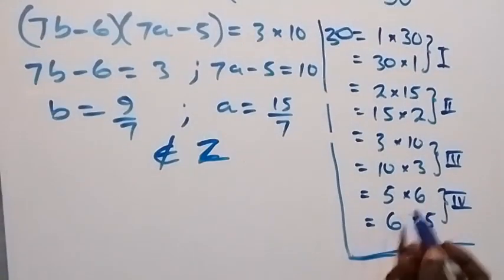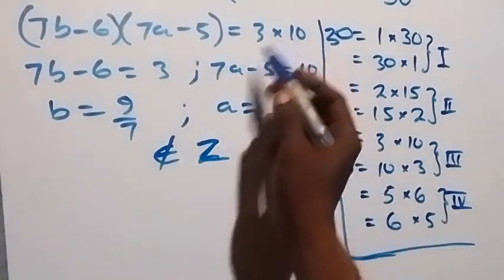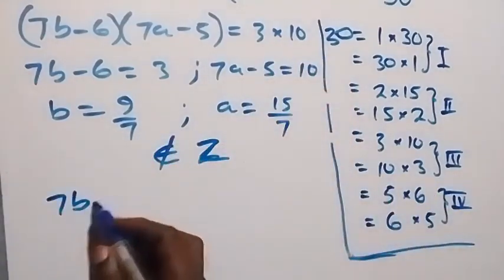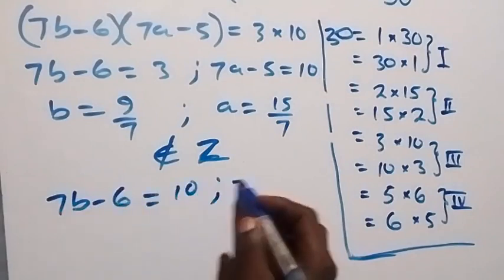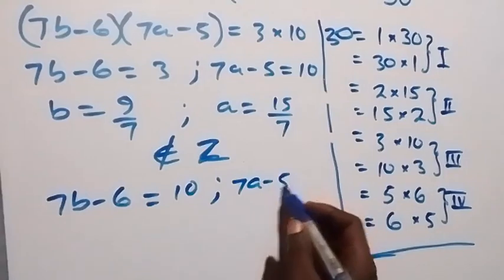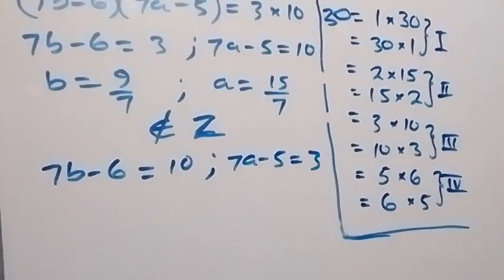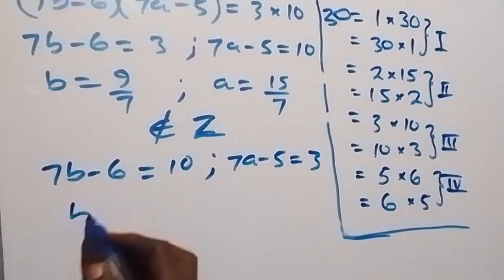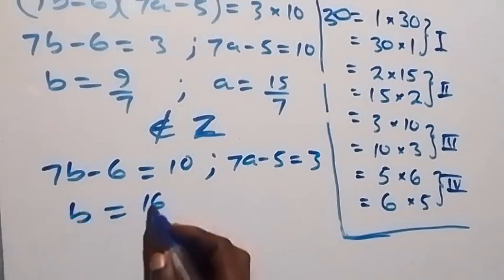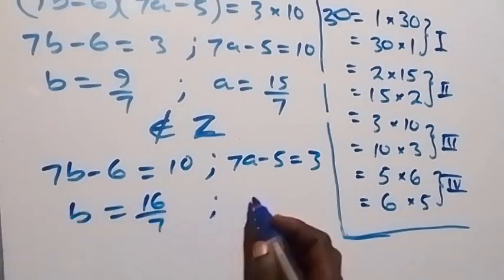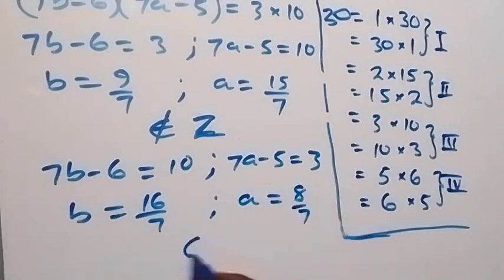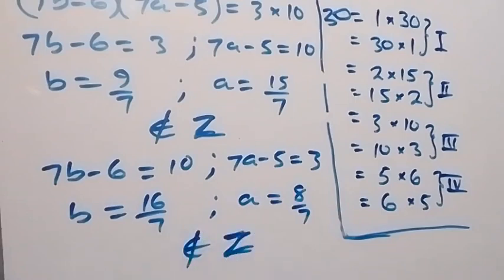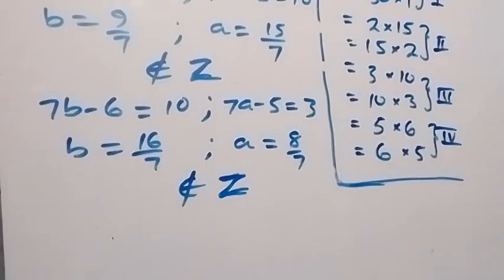When interchanged to 10 times 3: 7b minus 6 equals 10 and 7a minus 5 equals 3. Solving gives b equals 16 over 7 and a equals 8 over 7 — these two are not members of the integer solution.